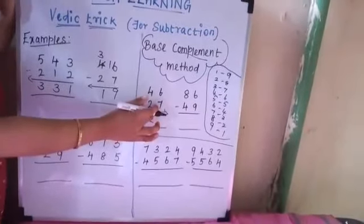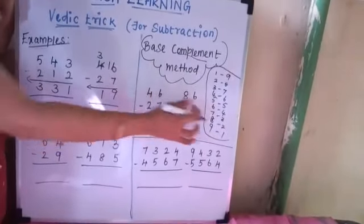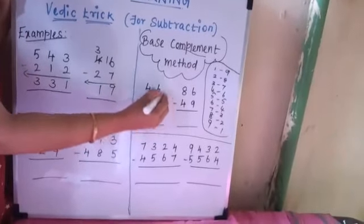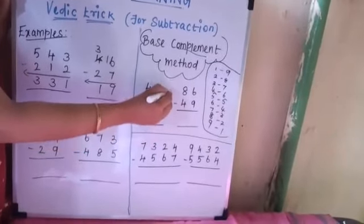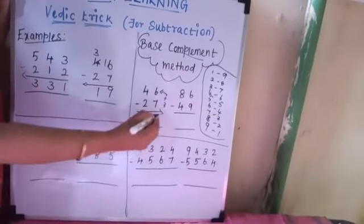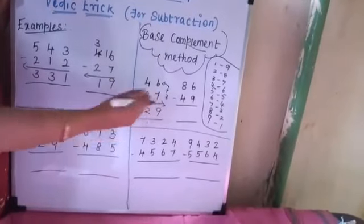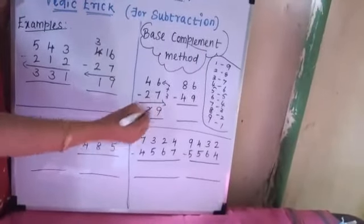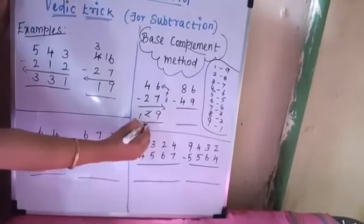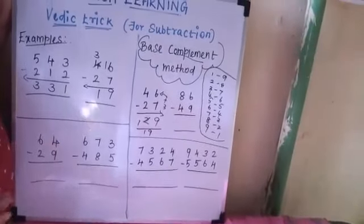How do we do it? The complement of 7 is 3. That 3 added with 6 gives 9. When you take the complement, the previous number must be reduced by 1 — that gives 1. So the answer is 19. Are we arriving at the same answer? Yes, same answer.